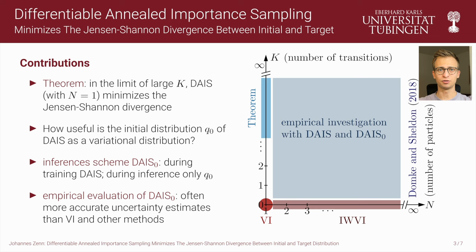In our paper we show theoretically that in the limit of many transitions and with one particle, Differentiable and Annealed Importance Sampling minimizes the Jensen-Shannon divergence between its initial distribution and target distribution. The Jensen-Shannon divergence is the sum of forward and reverse KL divergence. While the reverse KL divergence used in VI is known to be mode-seeking, the forward KL divergence used in Markovian score climbing (MSC) is typically associated with mass-covering behavior. The Jensen-Shannon divergence averages between both divergences.